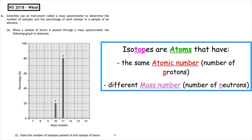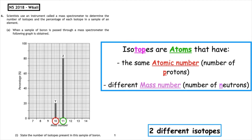If we look along the x-axis of the graph, we can see the label mass number. We have a value given at a mass of 10 and a value given at a mass of 11. Because we have two bars produced on the graph, there are two different isotopes.